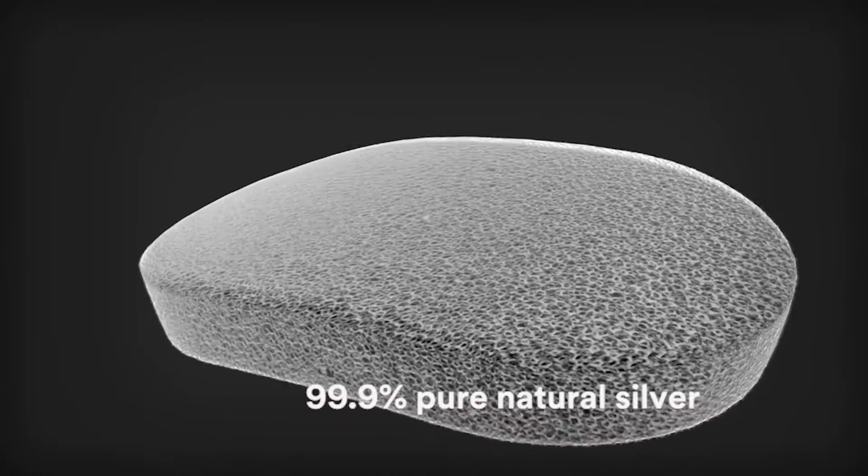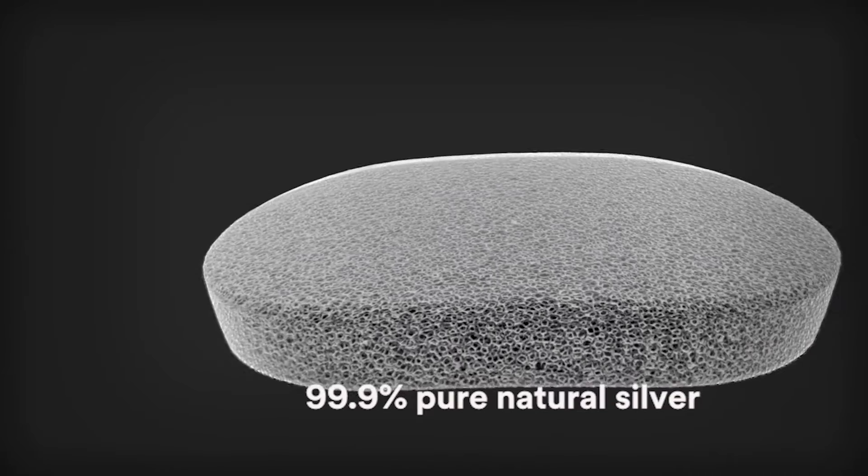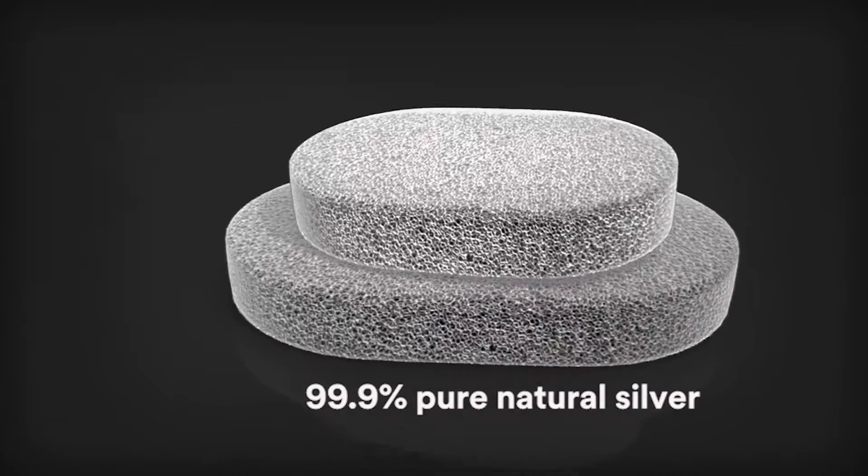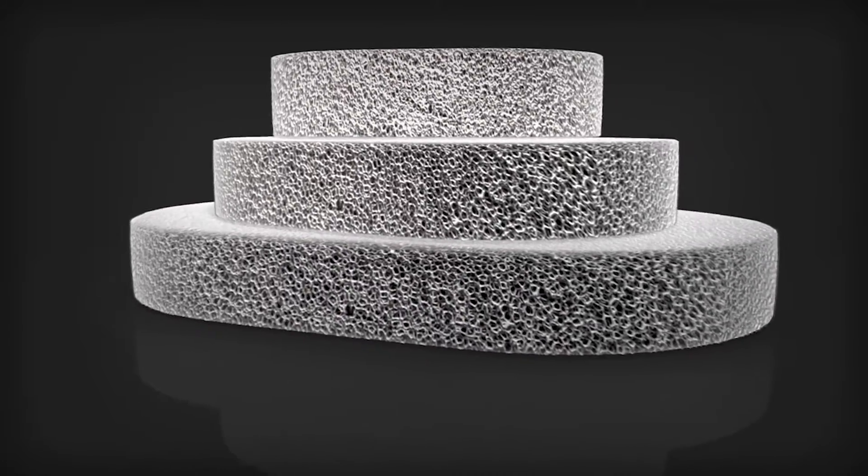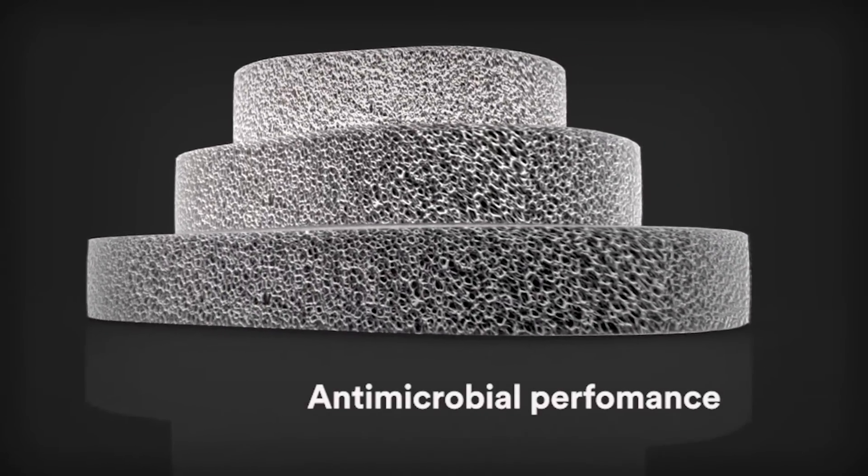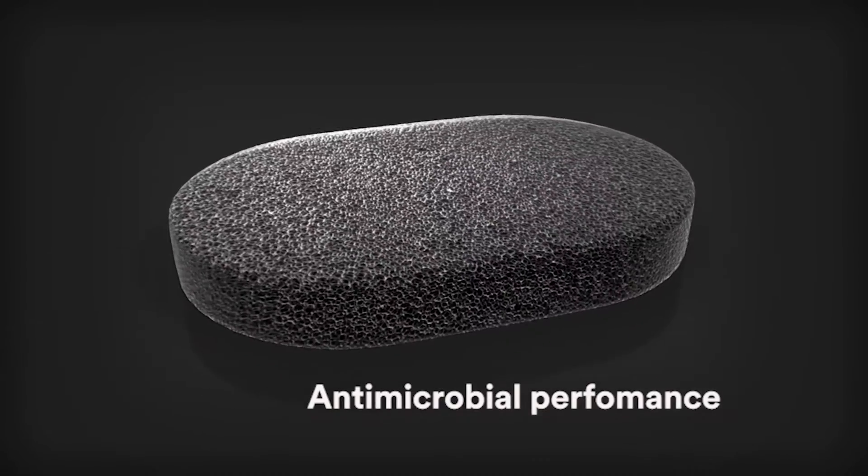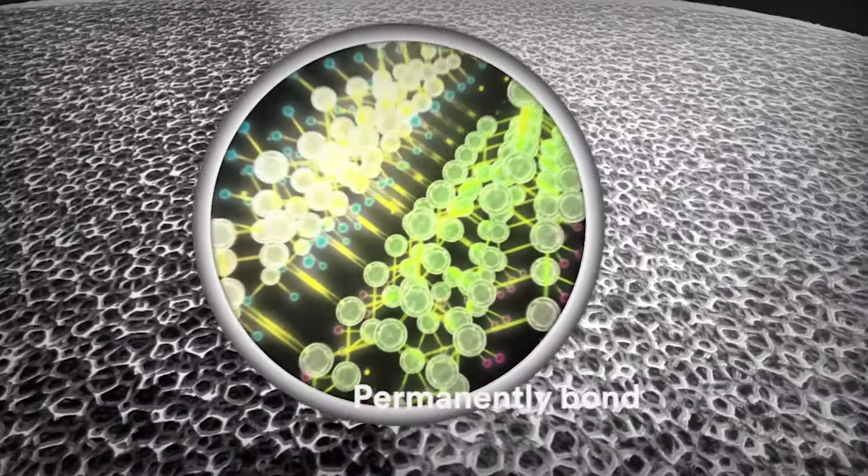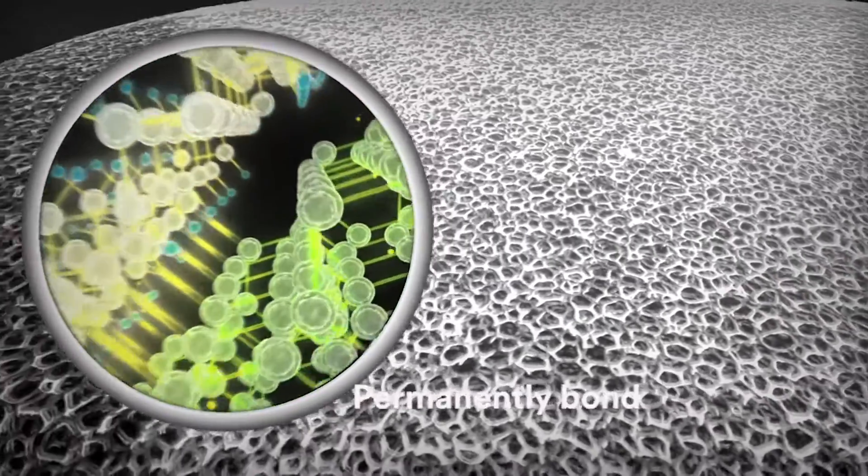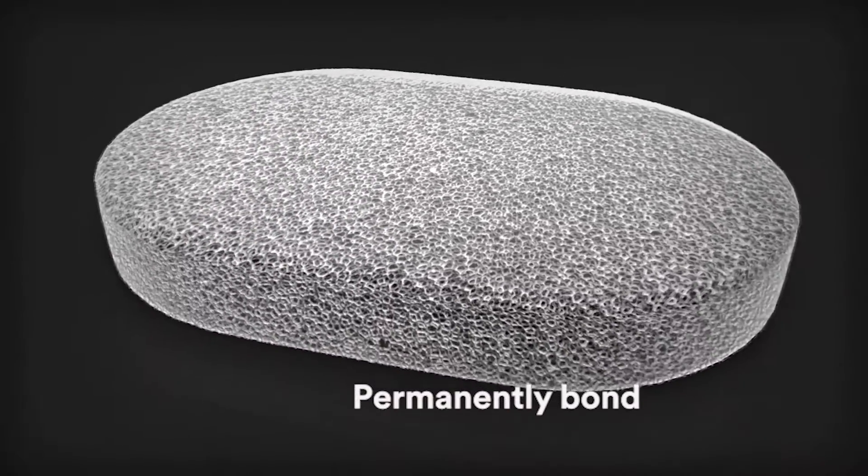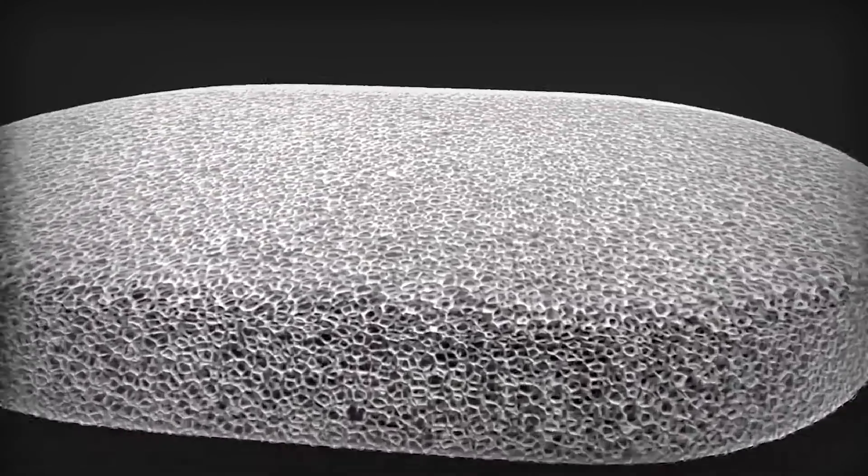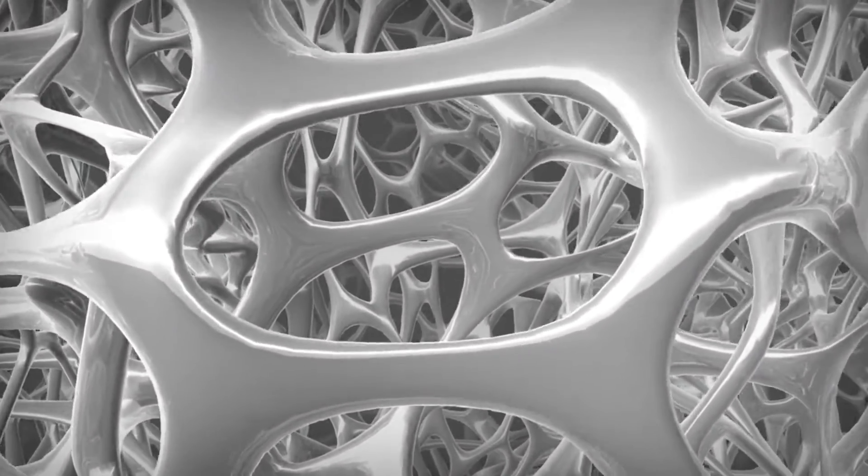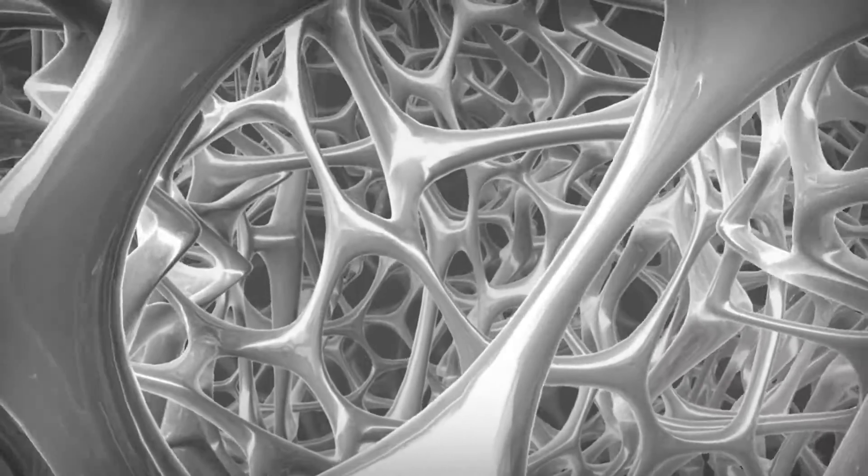Made with 99.9% pure natural silver, ecstatic technology enhances the VAC GranuFoam Silver dressing with continuous and sustained antimicrobial performance. Ecstatic technology uses a proprietary process to permanently bond 99.9% pure metallic silver to the entire surface area of VAC GranuFoam dressings.